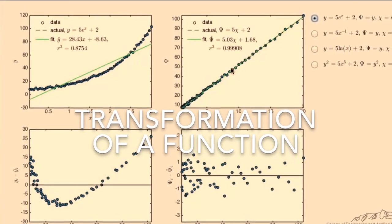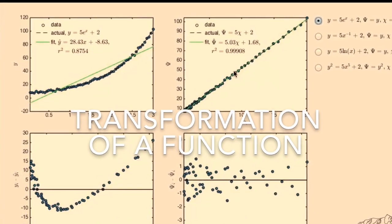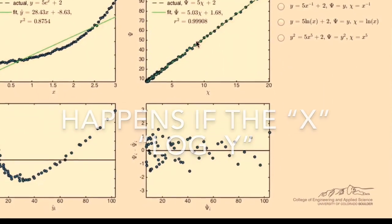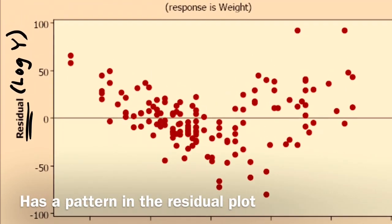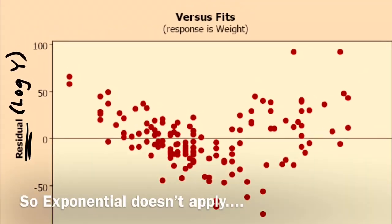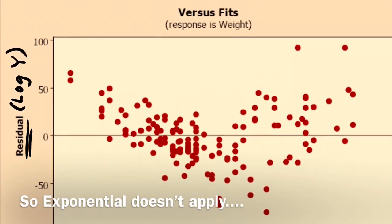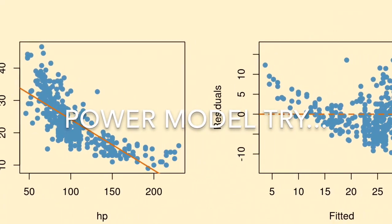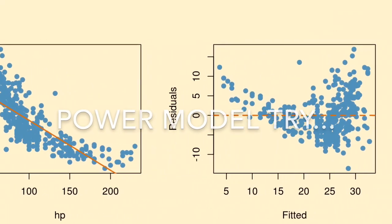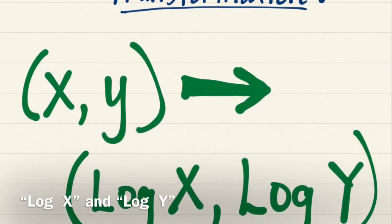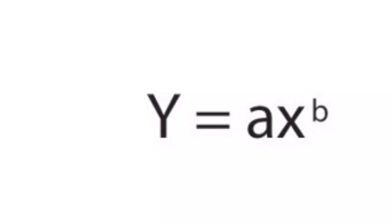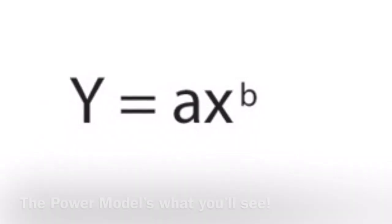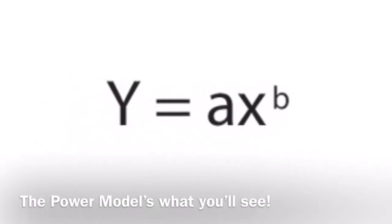Transformation of a function happens if the x log y has a pattern in the residual plot, and so exponential doesn't apply. Power model trial: log x and log y, y equals ax to the b. The power model's what you'll see.